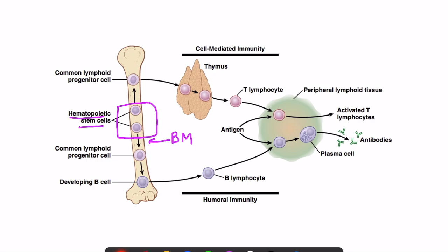There is a common lymphoid progenitor cell, which gives rise to lymphocytes. Within this, we have two types: the B cell precursors, which give rise to B cells, and the T cell precursors. These T cell precursors are the ones which will form the T cells important for cell-mediated immunity.